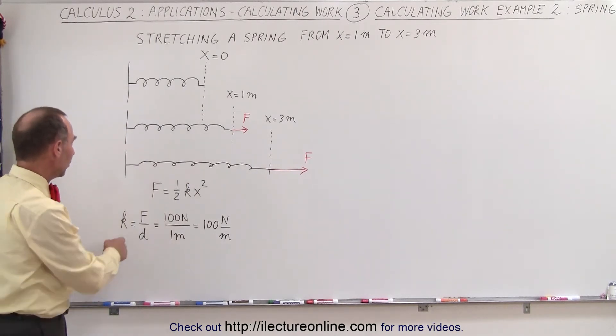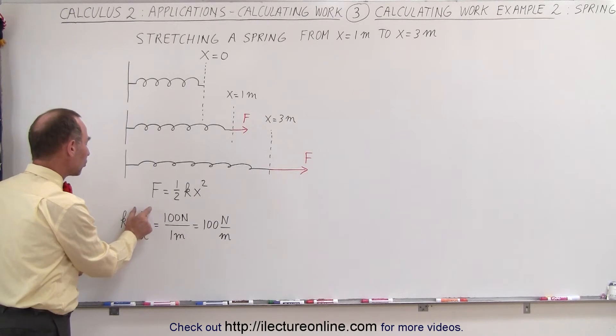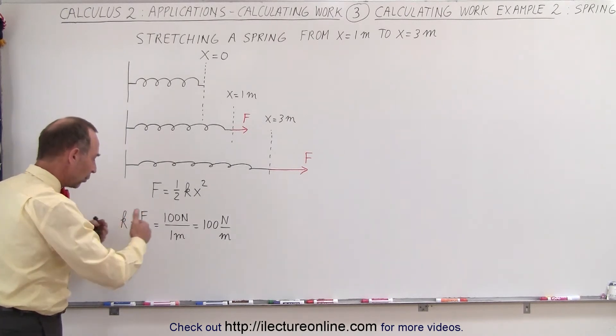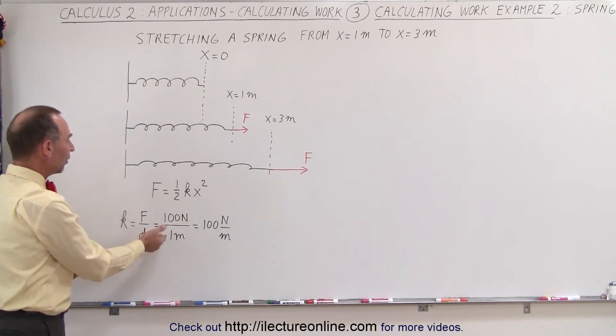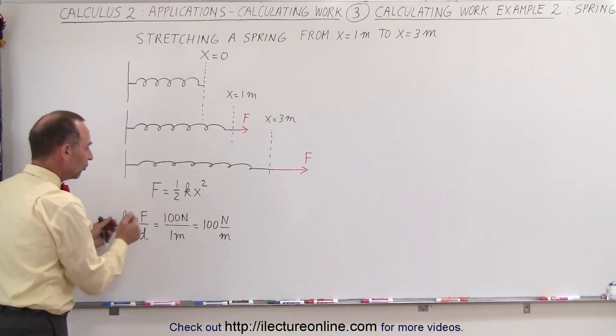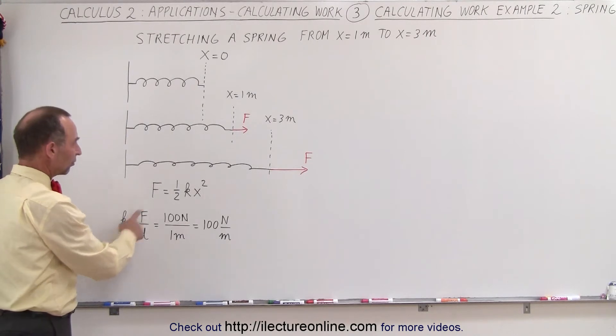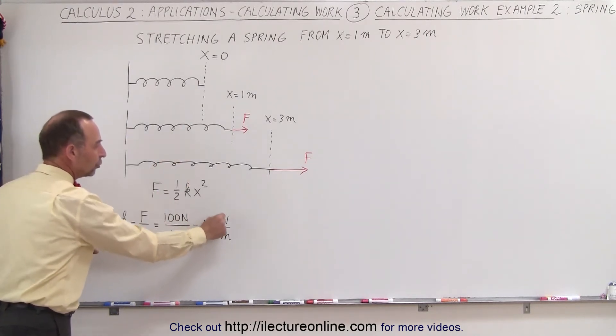That can be determined by taking the amount of force required to extend it or elongate a certain amount of distance. In this case, it required a force of 100 newtons to elongate the spring by 1 meter. So therefore, the spring constant for this spring is 100 newtons per meter.